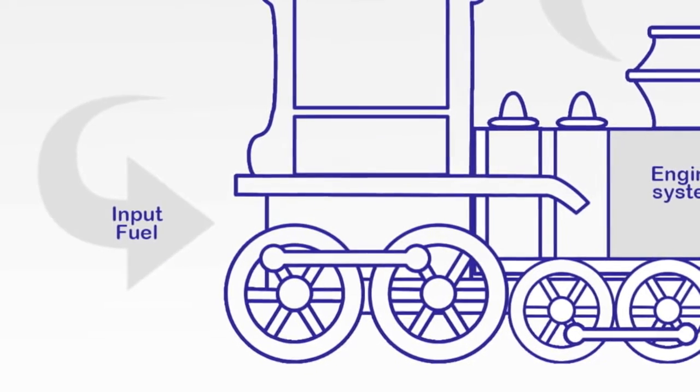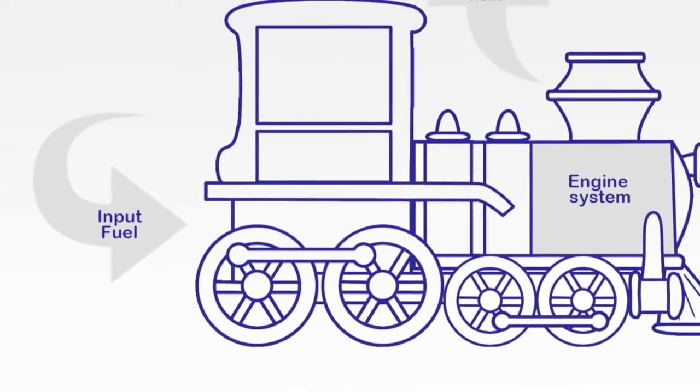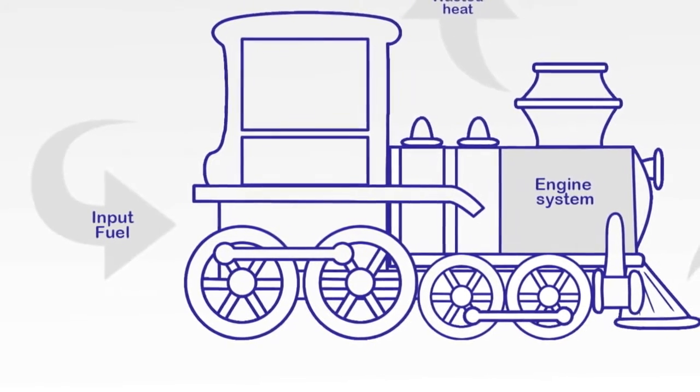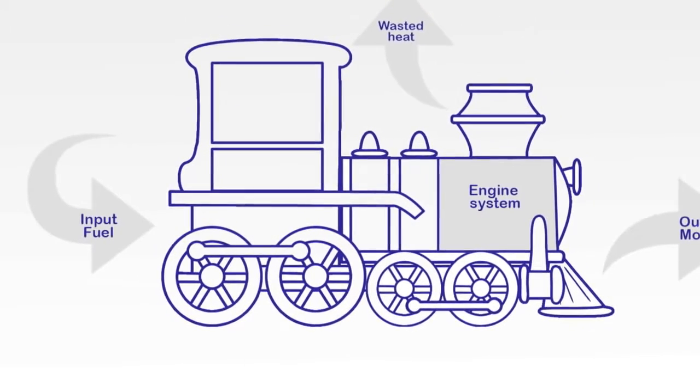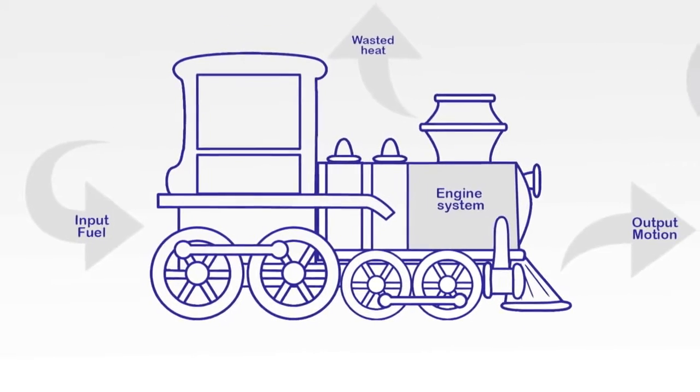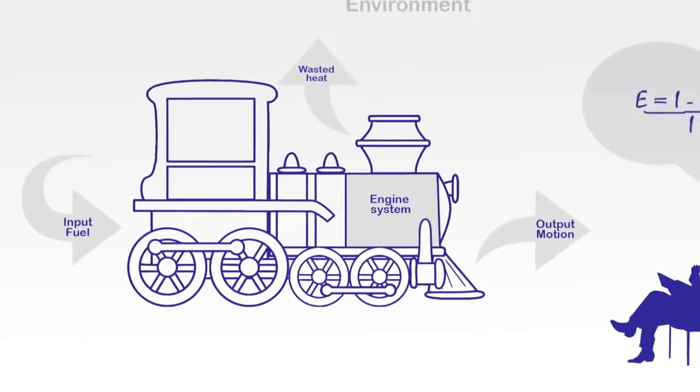An early use of this type of model was during the development of the steam engine, where scientists and engineers were thinking about the amount of fuel inputted to the engine, relative to the power output and heat energy wasted. By using this model they could create a quantifiable ratio between them, that we would now term the efficiency of the system.